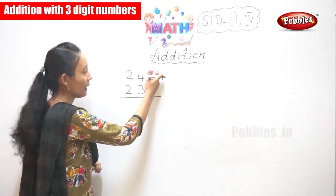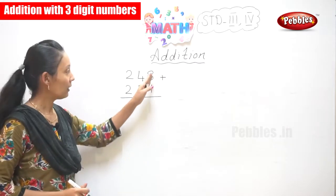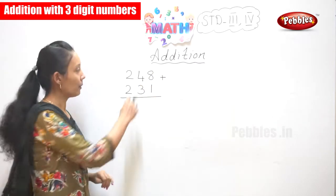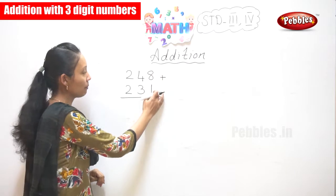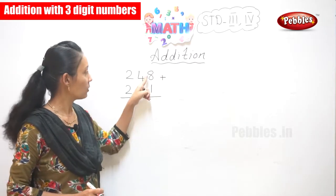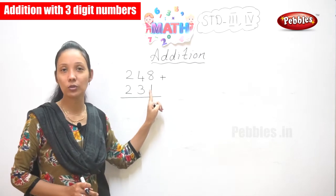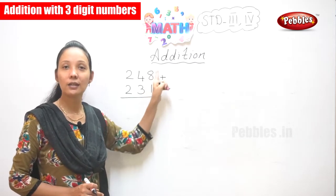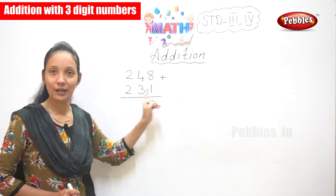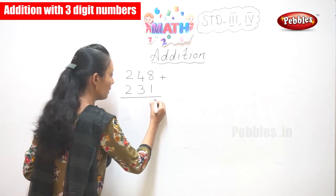First, what we have to do is you have to add 8 plus 1. How much is 8 plus 1, children? Because 1 is a small number, after 8 you add 1 with 8. So you have 9.